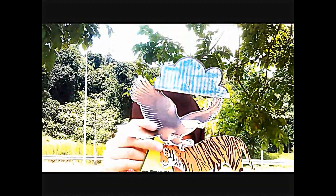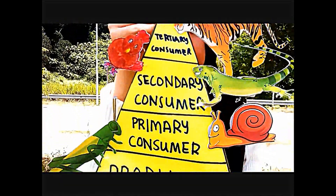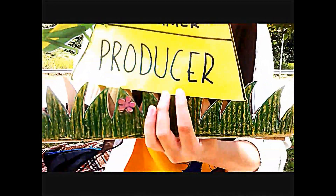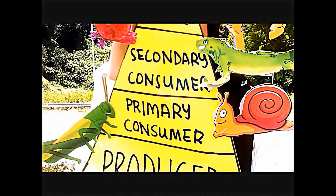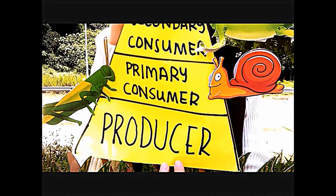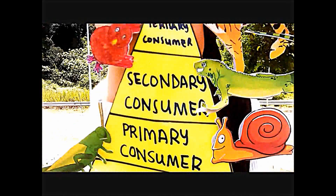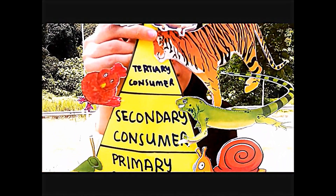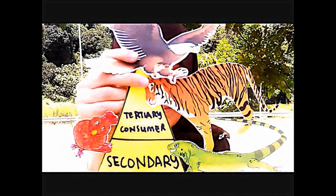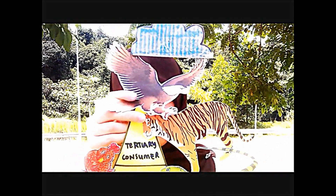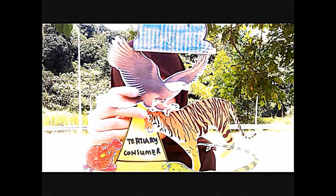This is the energy pyramid. The producer consists of trees and leaves. Second is the primary consumer, which includes grasshoppers and snails. Next is the secondary consumer, which includes chickens and lizards. And lastly is the tertiary consumer, which includes tigers and eagles.